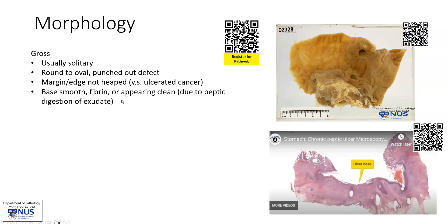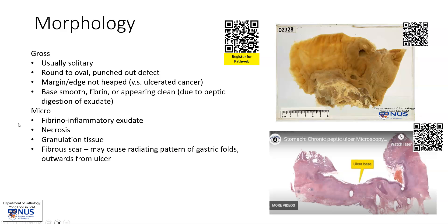The base can be smooth and appears clean because of peptic digestion of the exudate, or we can sometimes actually see some inflammatory exudate overlying the base. On microscopy, there are several layers: we see a fibrino-inflammatory exudate, followed by a layer of necrosis, then granulation tissue, and finally fibrosis.